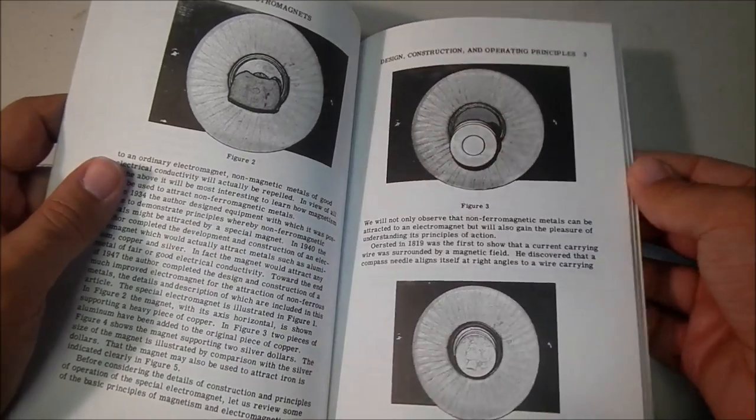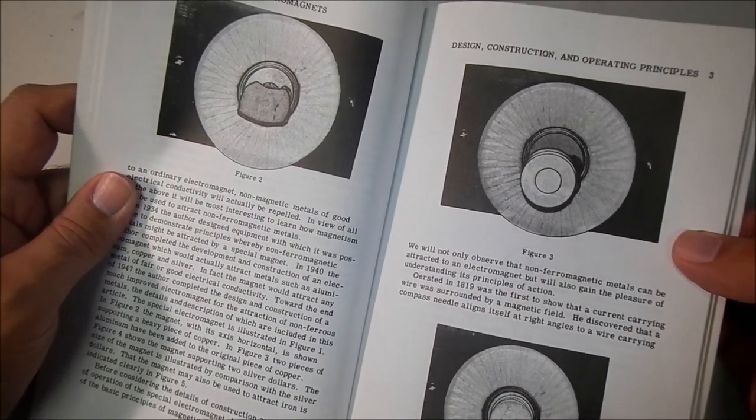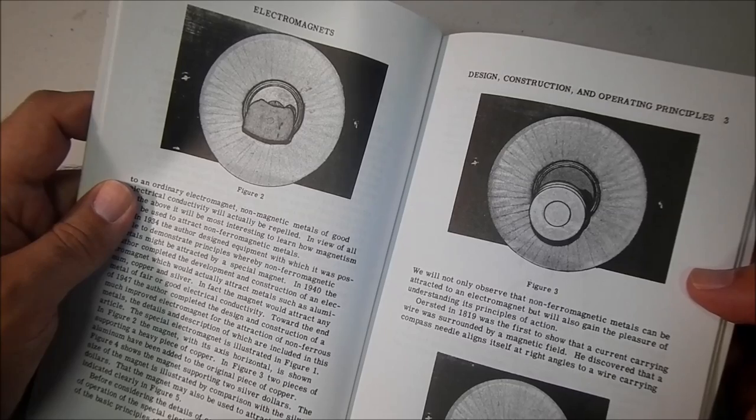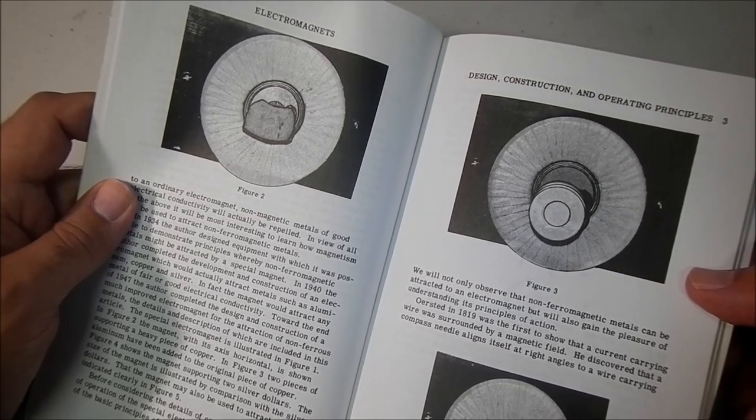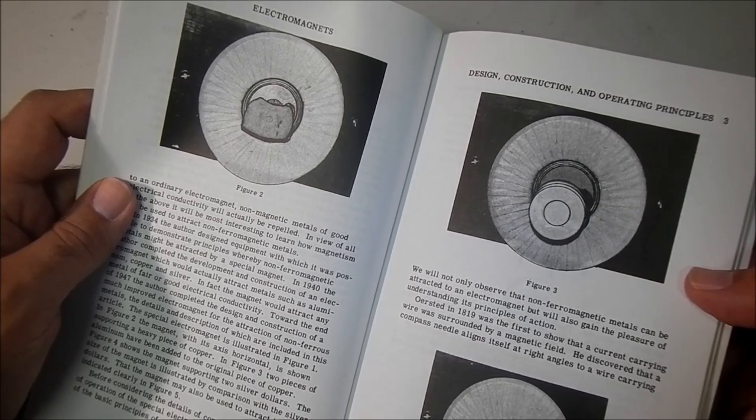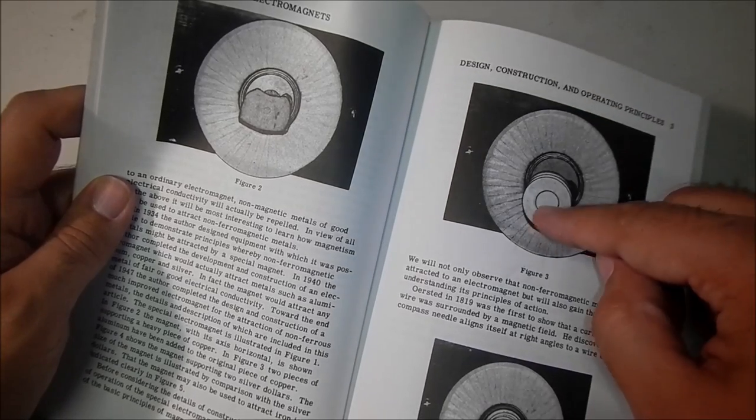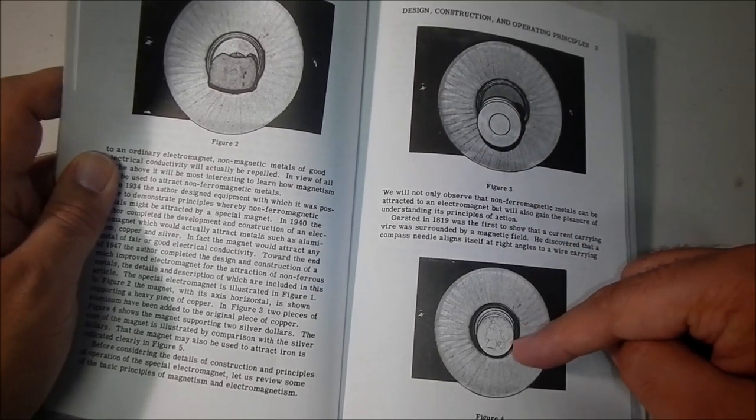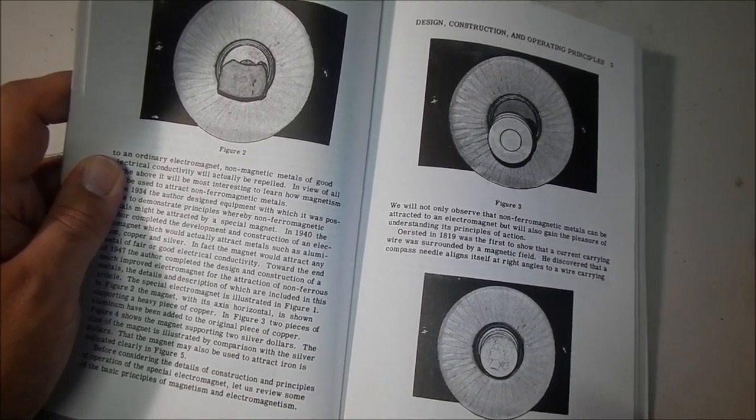He shows this AC electromagnet for attracting non-ferrous metals. You can see these different pieces of aluminum or silver coin that are attracted to his magnet.